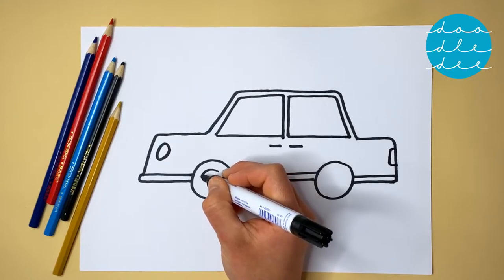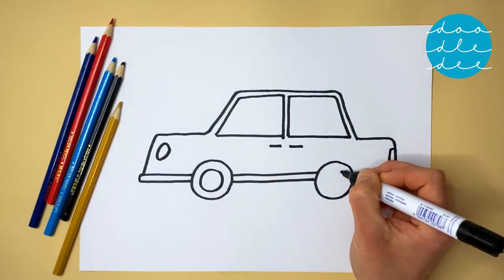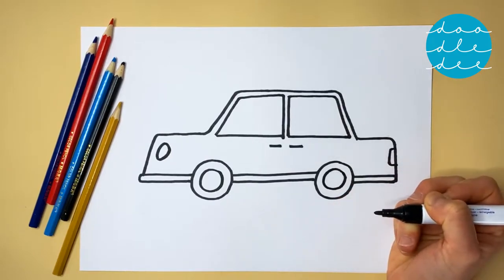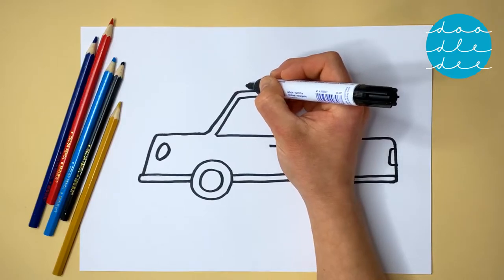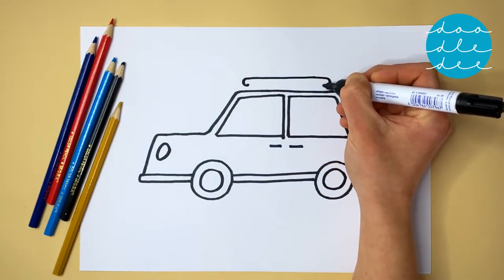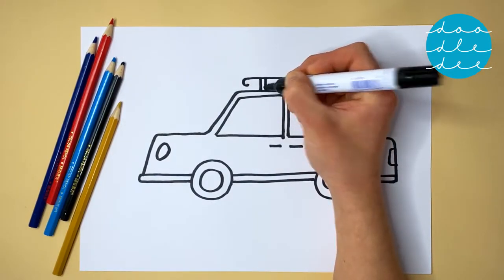We can add smaller circles inside the wheels. Our car needs a rack on the roof, all it takes is a line with some curls at the end, and some lines to join it to the roof.